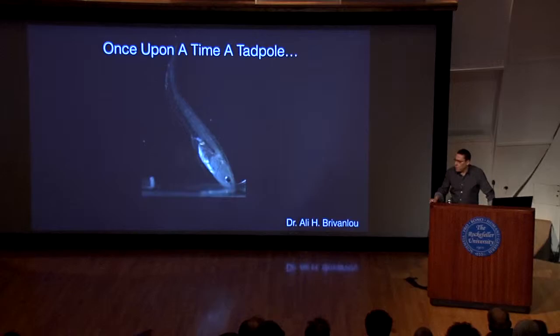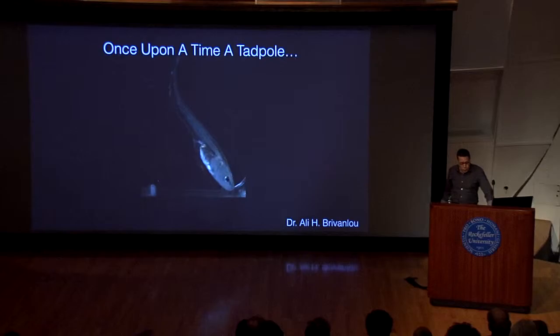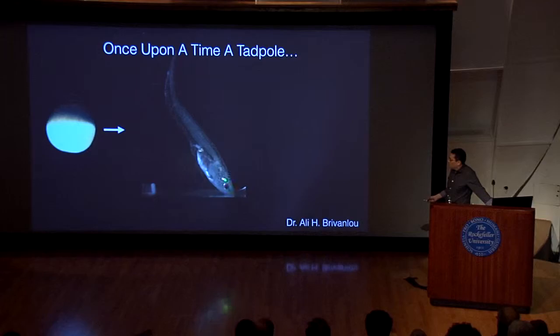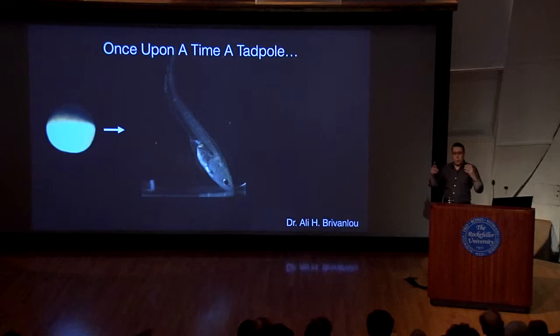So where do tadpoles come from? Where do tadpoles go is part of the story I want to tell you today. Once upon a time, a tadpole starts with an egg. As Mark said, this one egg gives rise to this beautiful structure. An egg is made of one cell. You can consider one cell as one piece of Lego that you would use to build a castle — it's the unit that, when assembled, generates forms much bigger than individual Legos.